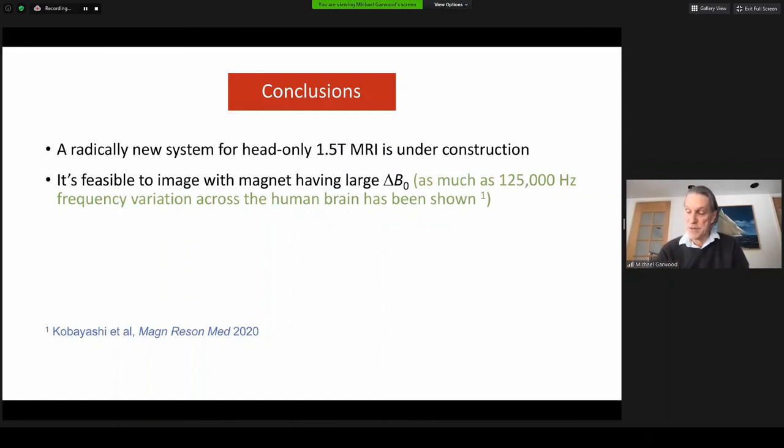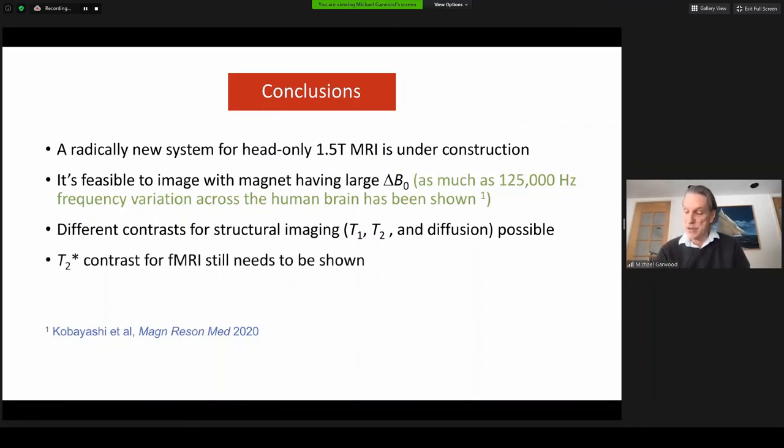In experiments, we have shown the feasibility to image with as much as 125 kilohertz of frequency variation across the brain. Furthermore, we have shown it's possible to generate different types of contrast, including T1, T2, and diffusion contrast. Although at this time, we still don't have a method to image with T2 star contrast, but we're working on that.